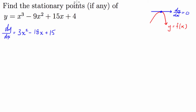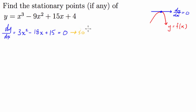Now, at the stationary points we know that the derivative is equal to zero, so we're going to make that equal to zero straight off the bat. So that's our first step: we take the derivative and set it equal to zero. Then we have to solve for x.